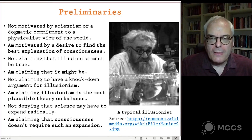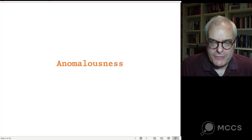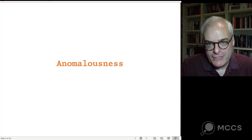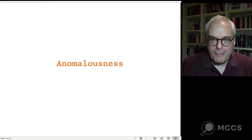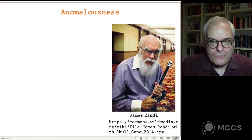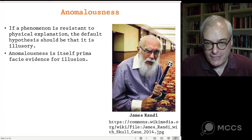Let's look at some arguments for illusionism — some considerations that tend to support the position. Let's begin with a simple one: anomalousness. If you've come across some phenomenon that seems strange, mysterious, scientifically inexplicable, then it's reasonable to suspect that it might be an illusion. If someone appears to levitate from the ground before your eyes, it's reasonable to suspect there's a trick involved. Resistance to scientific explanation is prima facie evidence for illusion. It doesn't show that the thing isn't real, but it's reason to suspect that it might be an illusion.